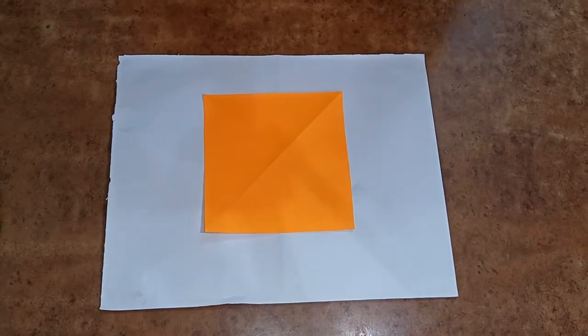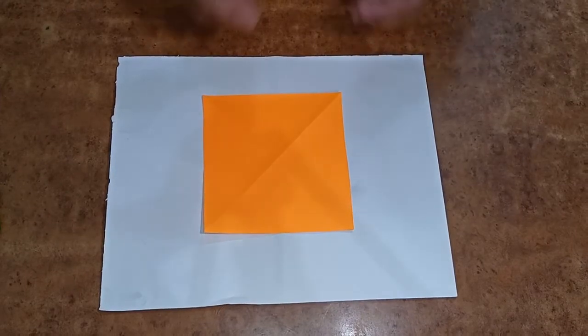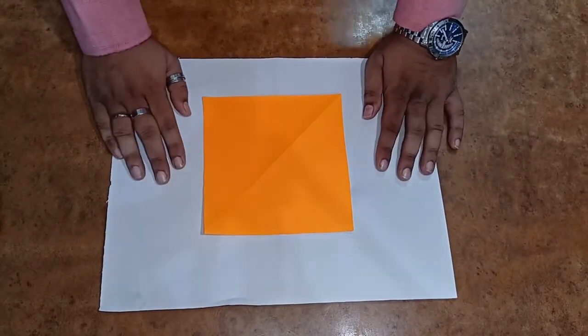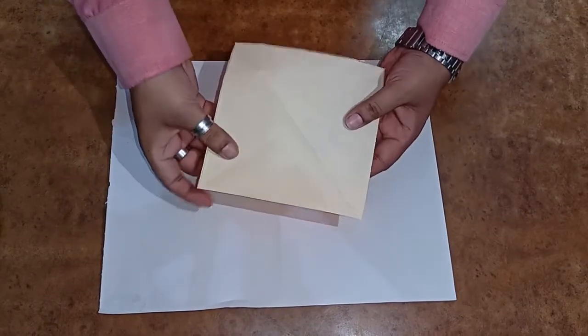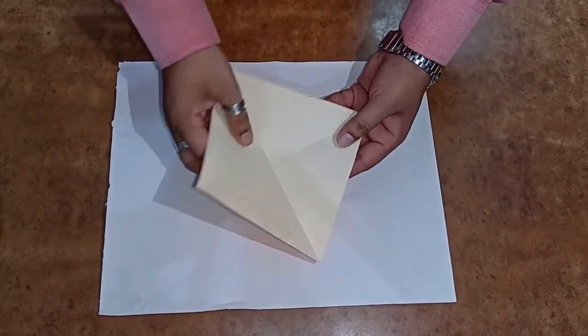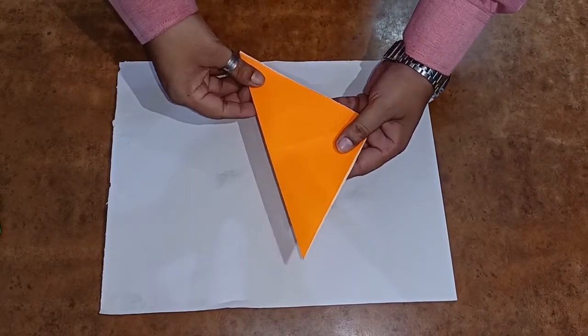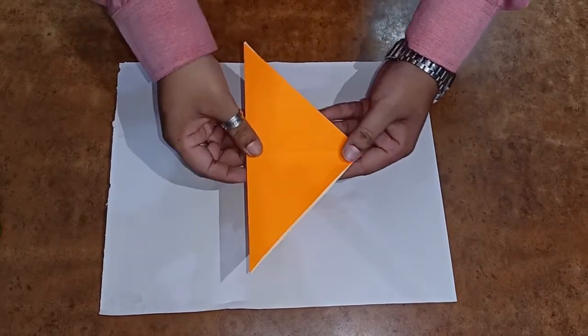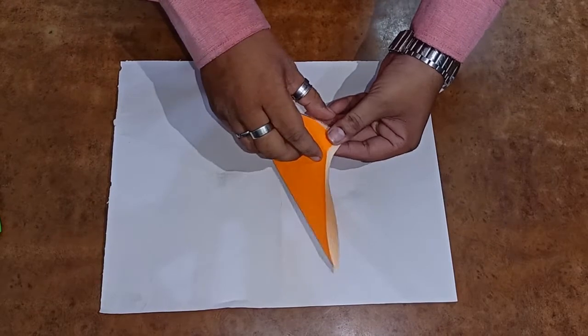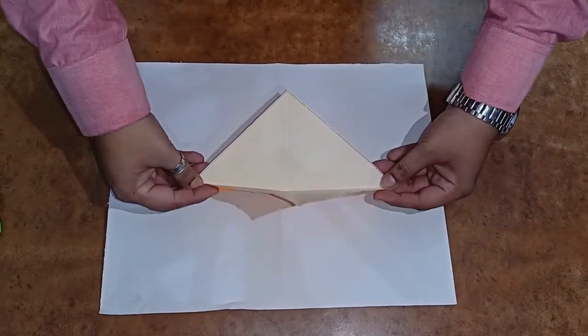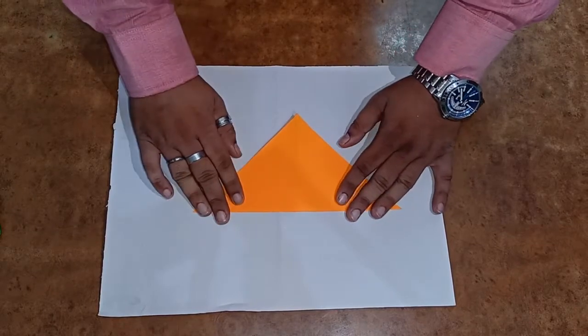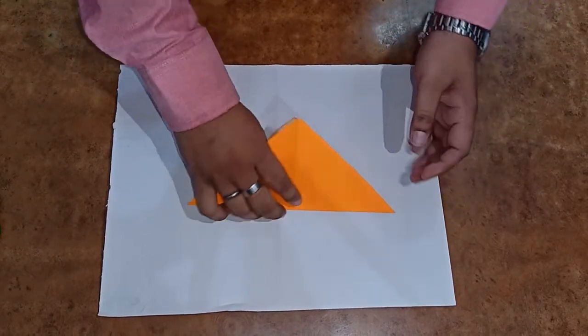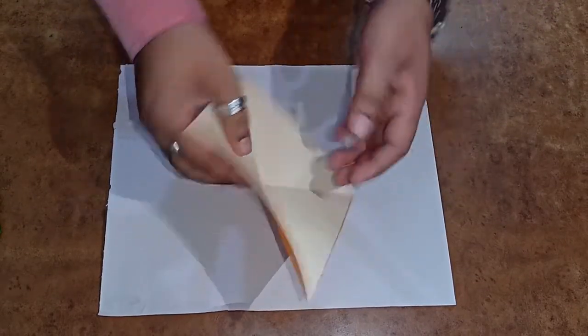Now students, let's begin with the body of our carrot. Now first, what we have to do, we have to take the fluorescent paper and we have to just fold it from the edges. Okay, like this. Then again, we have to fold with another edges. Now the paper will be shaped like this.